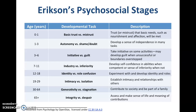Early adulthood, ages nineteen to twenty-nine, is intimacy versus isolation — about building relationships with others and ultimately building romantic relationships. Ages thirty to sixty-four, middle adulthood, is the period of generativity versus stagnation — generativity being about giving to and guiding the next generation, looking to contribute to society and to one's family.